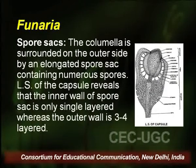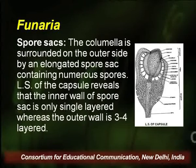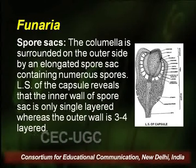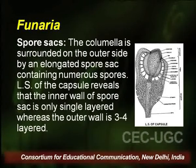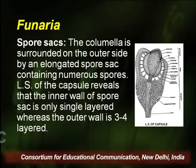The columella is surrounded on its outer side by an elongated spore sac containing numerous spores. In a longitudinal section of the capsule, the inner wall of the spore sac is only single-layered whereas the outer wall is 3 to 4 layered. Each spore mother cell gives rise to 4 haploid spores. Elaters are absent in the spore sac of Funaria. A large air space is present on the outer side of the spore sac, traversed by delicate strands of elongated green parenchyma cells known as trabeculae, which connect the innermost layer of the capsule wall to the outer wall of the spore sac.